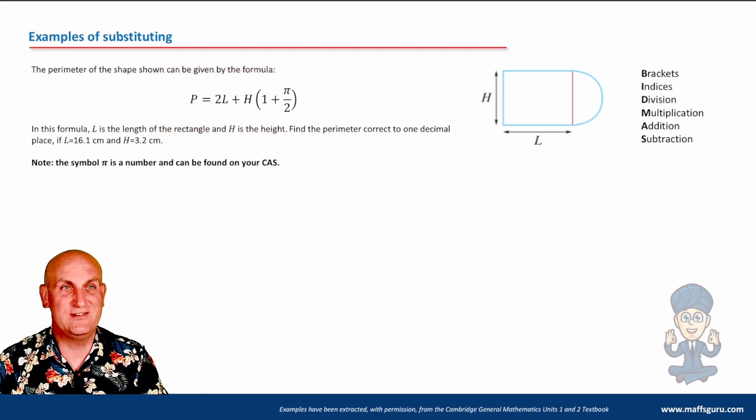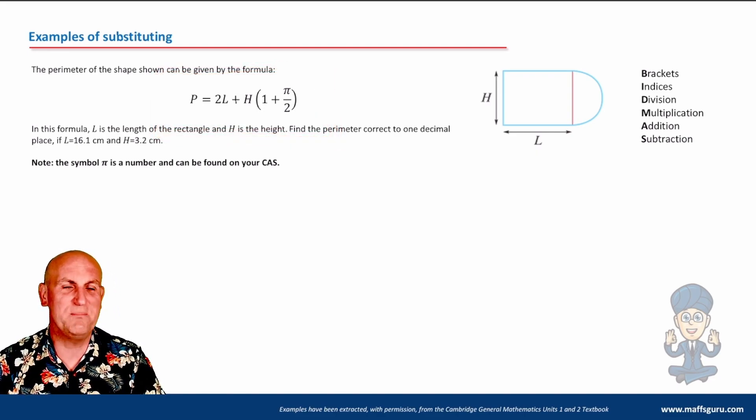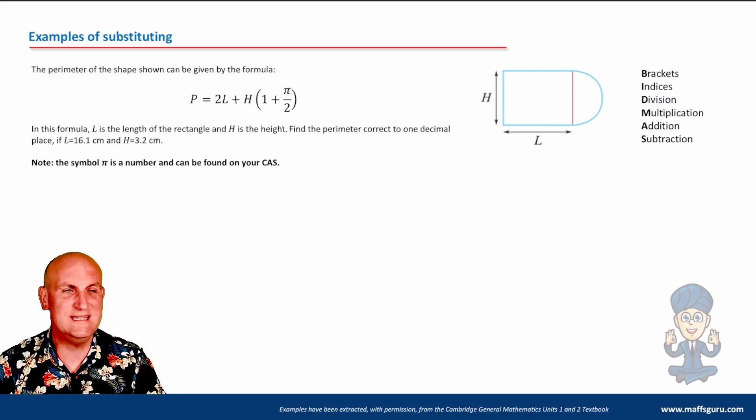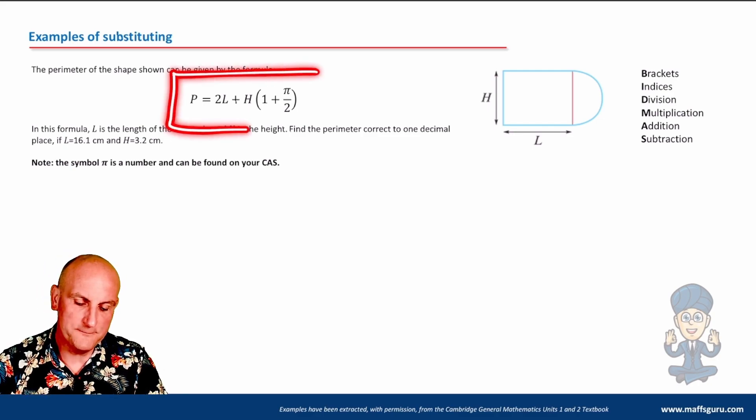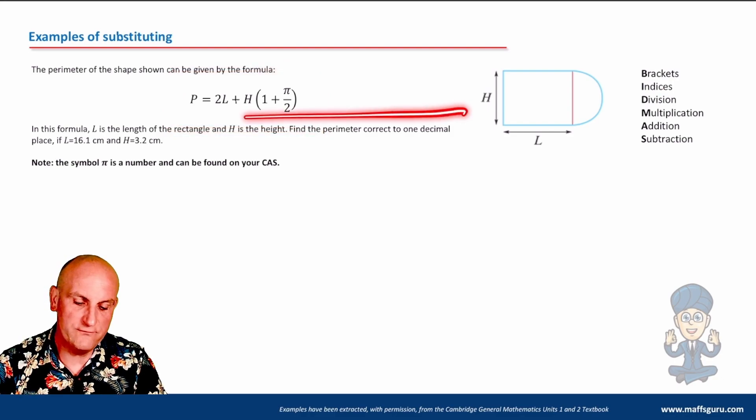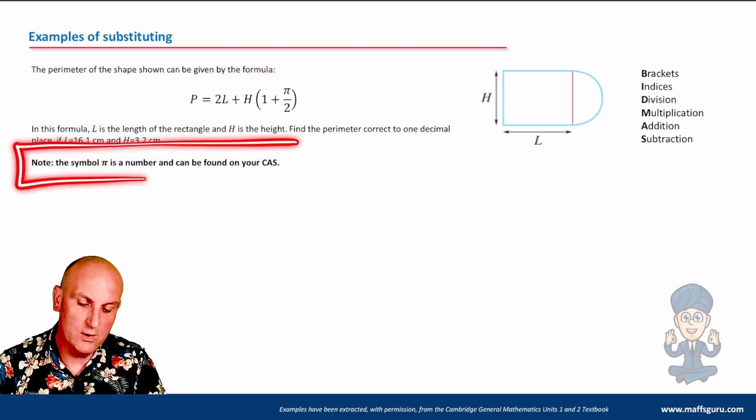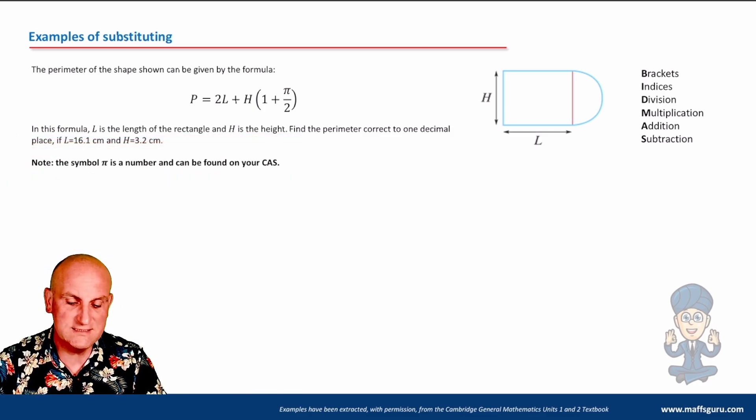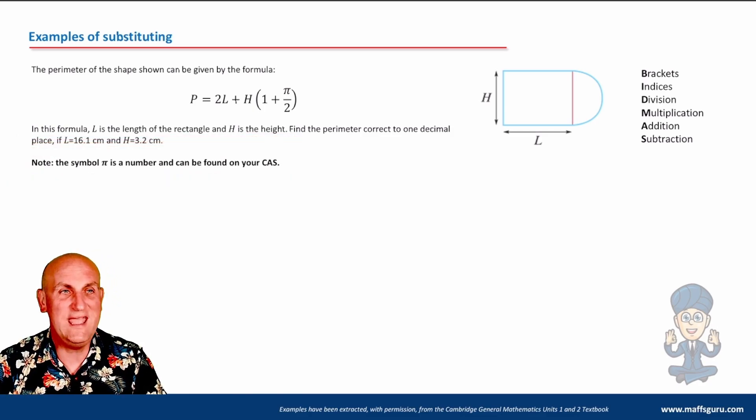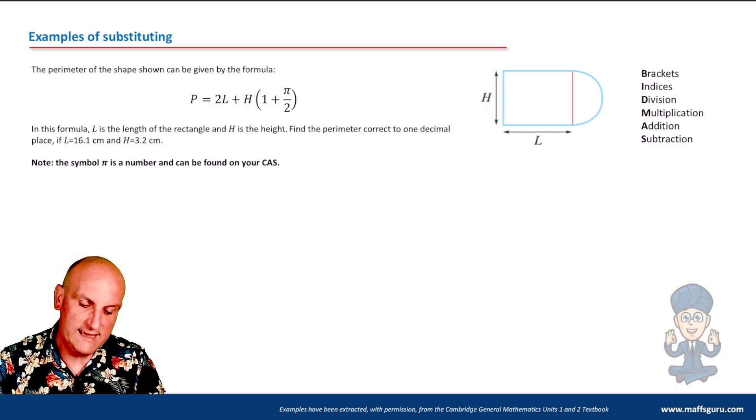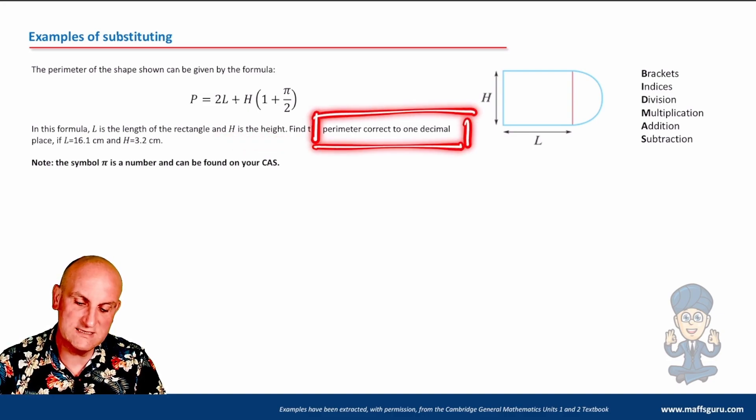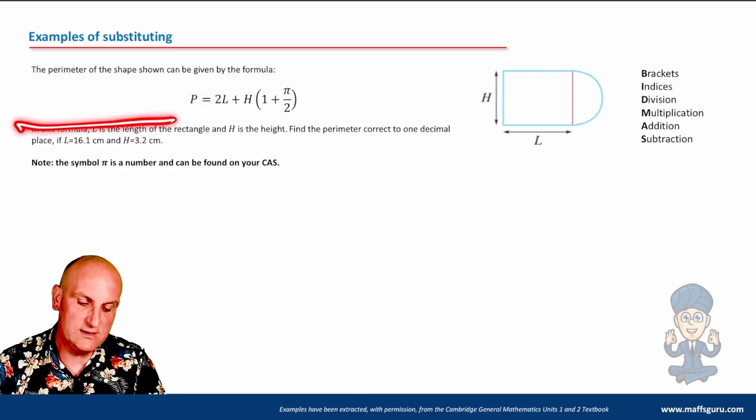Now it doesn't matter what formula they give you. That looks fairly disgusting. P equals 2L plus H brackets 1 plus PI on 2 close brackets. It doesn't matter. When they give you a formula, they're undoubtedly going to give you the information in the question that I'm highlighting here to help you do what you need to do. In this formula, L is the length of the rectangle and H is the height. Find the perimeter correct to one decimal place.